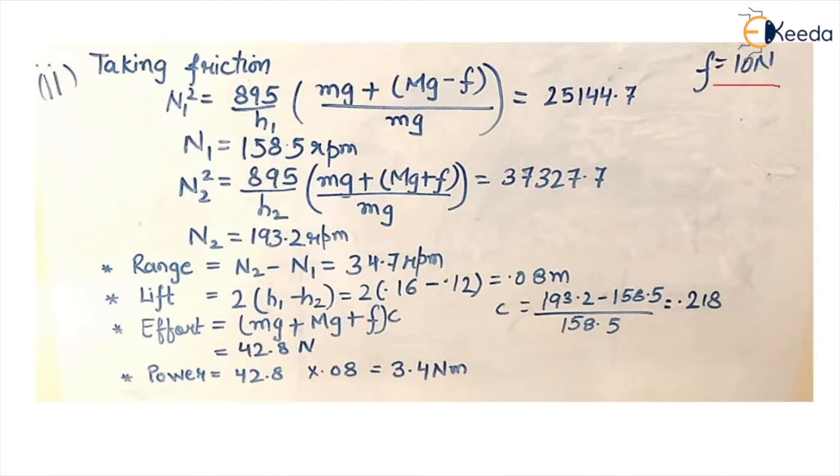Force of friction acts opposite to the motion of the sleeve. So whenever sleeve moves up friction acts downward and whenever sleeve moves downward friction acts upward. So it is mg plus f and mg minus f for two different cases. So we have just made the changes in the formula mg minus f and mg plus f.